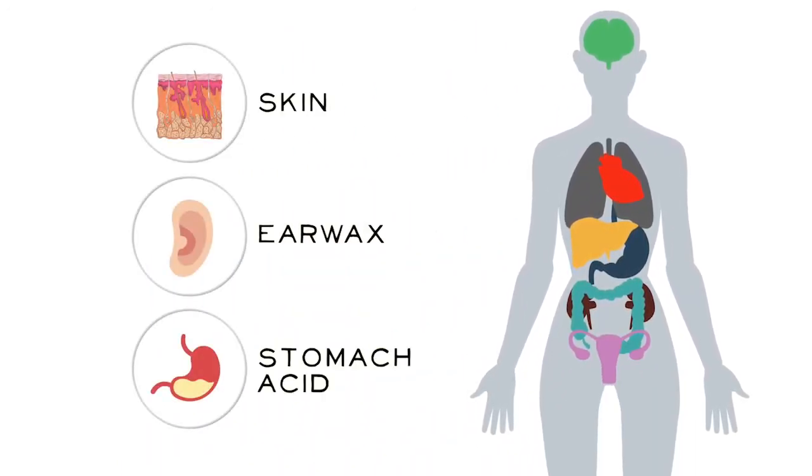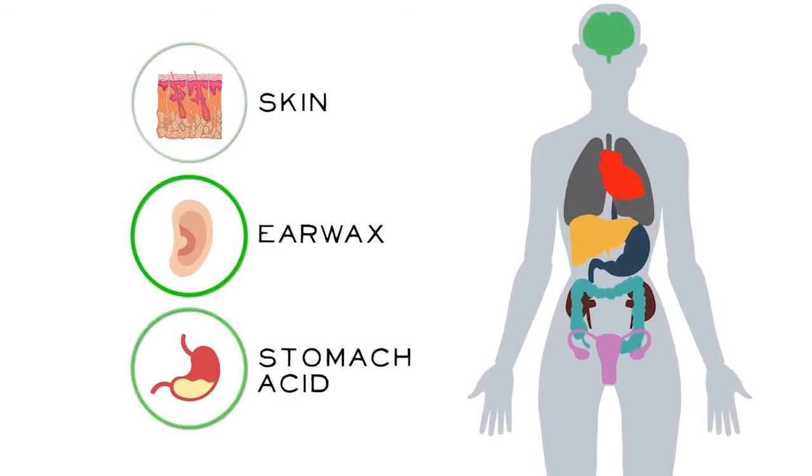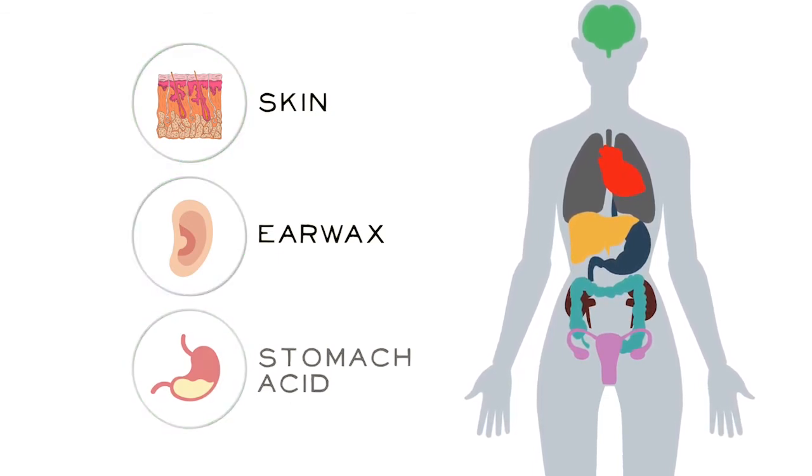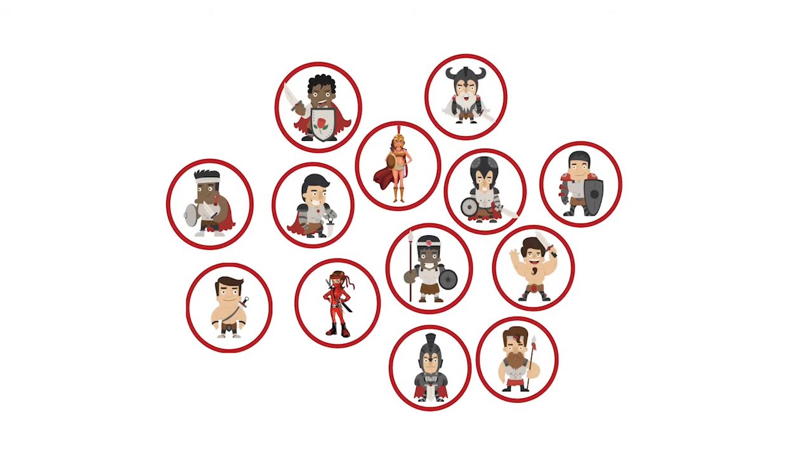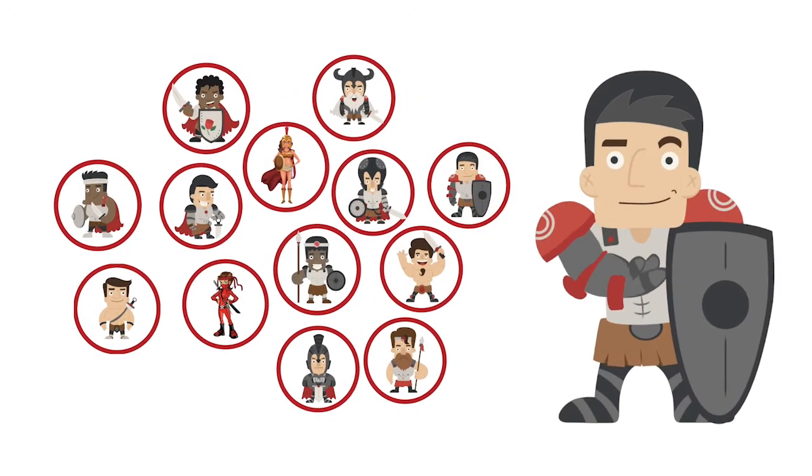in our ears and the acid in our stomachs are all ways that invaders are blocked before they can get into our bodies. In addition to these blocks to infection, everyone has an army of cells inside them that works